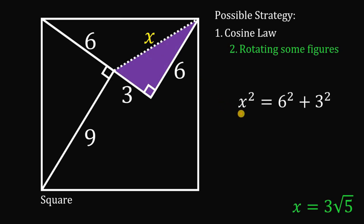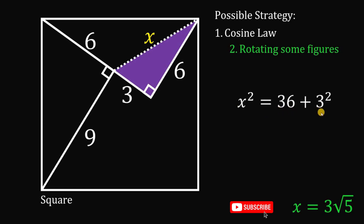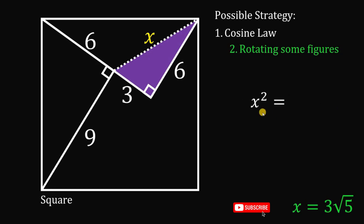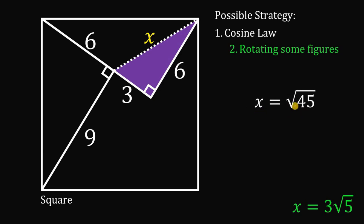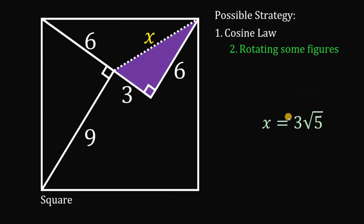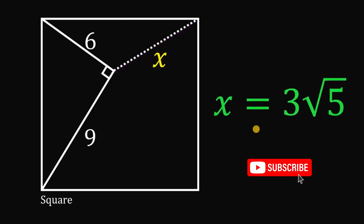Using this right triangle, we can now easily solve for x. By the Pythagorean theorem: x squared equals 6 squared plus 3 squared. 6 squared is 36, 3 squared is 9, and 36 plus 9 equals 45. Taking the square root of both sides, x equals the square root of 45, which simplifies to 3 times the square root of 5. Therefore, the value of x given this figure must be equal to 3 times the square root of 5 units.